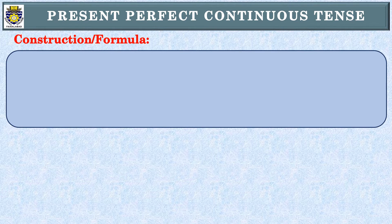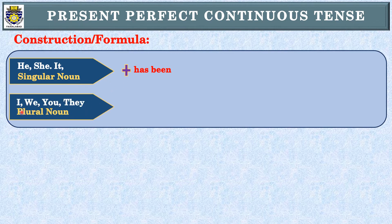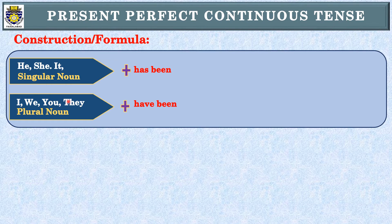Its construction or formula: اگر sentence he, she, it یا singular noun سے start ہو تو اس کے ساتھ ہم 'has been' لکھیں گے — جیسے Ali, the teacher یعنی third person singular۔ اگر sentence I, we, you یا they سے start ہو یا plural pronoun کے ساتھ start ہو تو ہم 'have been' لکھیں گے۔ I اور we first person pronouns ہیں، you second person، اور they third person plural ہے — اس لیے they کے ساتھ have been۔